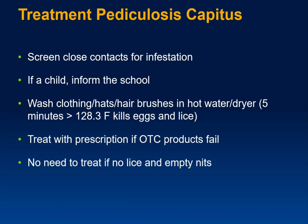First, screen close contacts for infestation. If it's a child, inform the school, as other kids may be infected. Wash anything that has come in contact with the person's hair — hats, clothing, hairbrushes — using hot water and a dryer for about five minutes. The temperature needed is about 128.3°F to kill eggs and lice. There's no need to treat if there are no lice and the nits appear empty, but most people go ahead and treat anyway since schools require it.